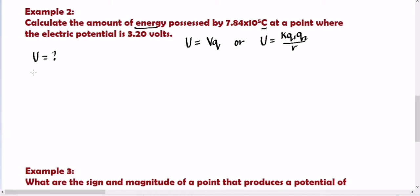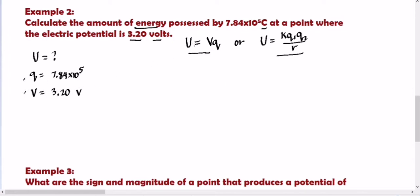Then 3.20 volts, which is our electric potential V. So we have Q and V as given. Meron tayong dalawang available formula dito. Based on the given, meron tayong Q at V, so we'll use the formula U equals VQ. We cannot use the other formula because we only have one charge, while that formula requires two charges — Q1 and Q2.